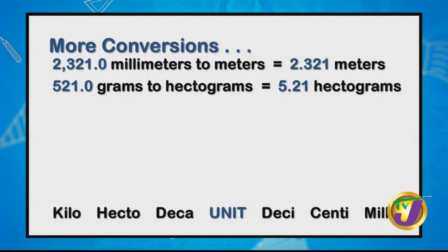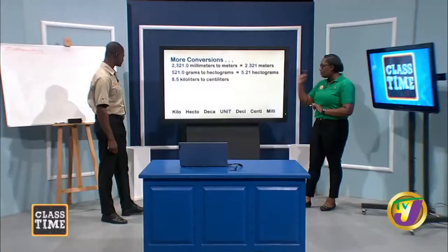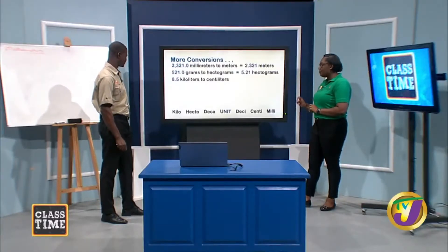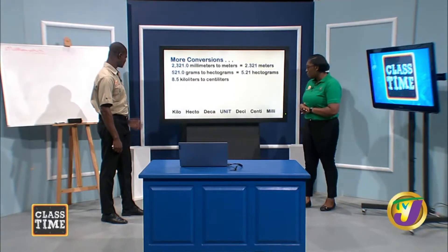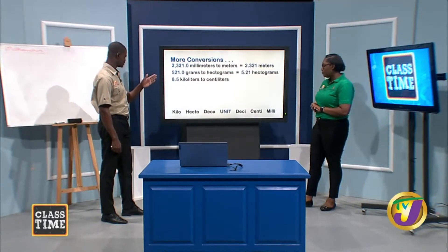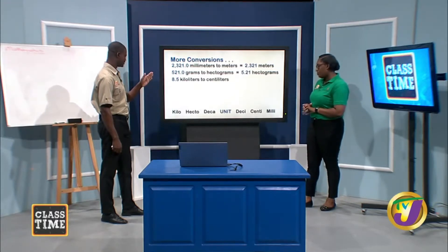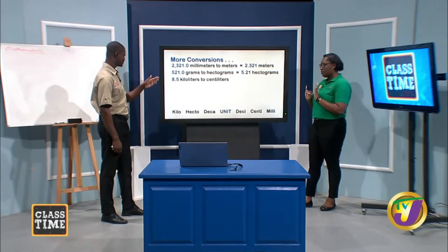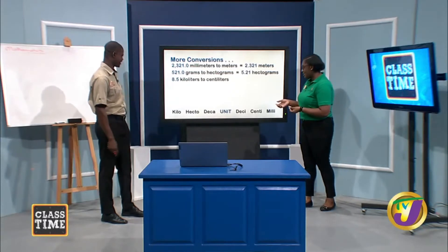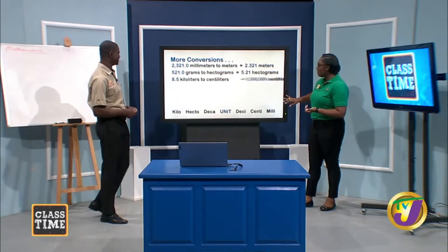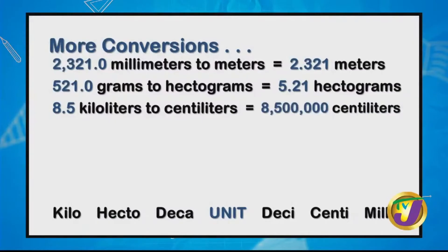Convert 8.5 kiloliters to centiliters. Identify where you are — kilo — where you need to go — centi — and count the units in between: 5 units, so we multiply by... actually counting carefully, there are 5 gaps, giving us a factor of 100,000... wait, counting again: kilo to hecto, deca, unit, desi, centi — that is 5 steps down, so multiply by 100,000. The answer is 850,000 centiliters.